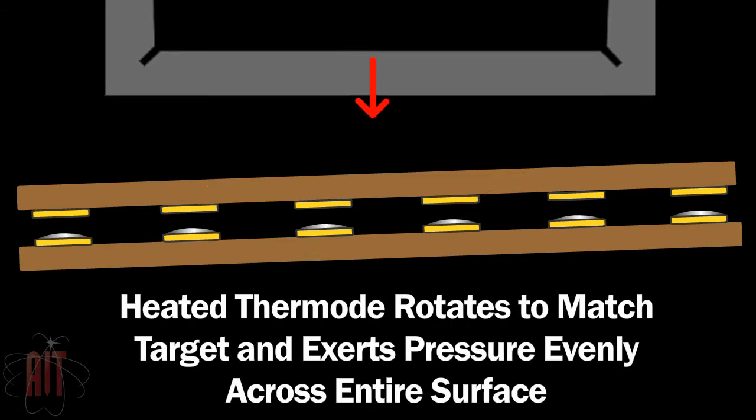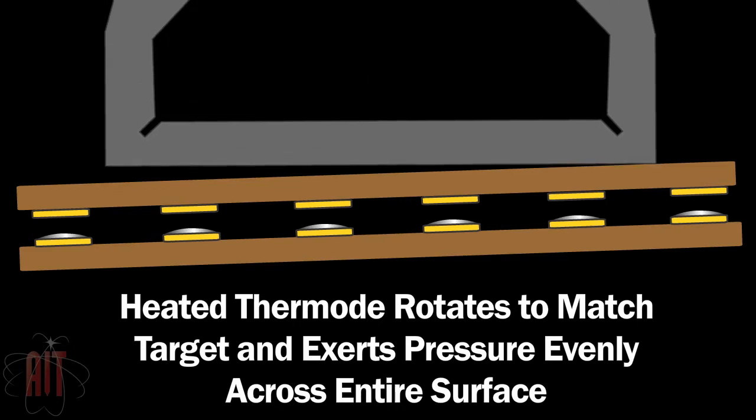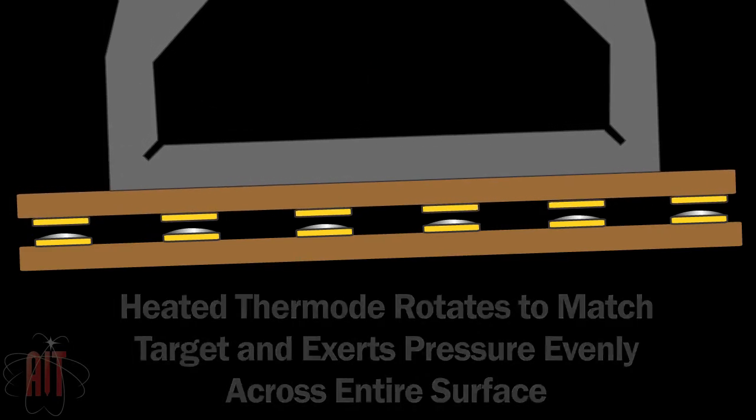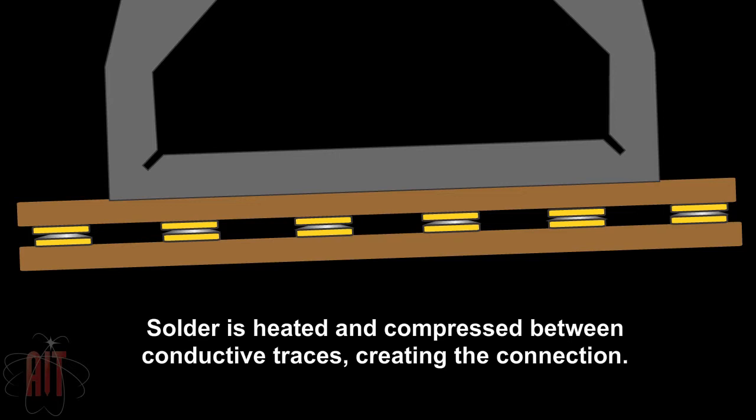This view shows an exaggerated example of how the hot bar thermode can rotate and float, equalizing the pressure across the length of the bond area.